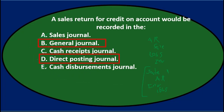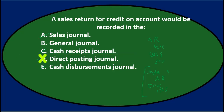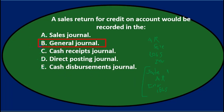So we're left with either B or D. The question is whether the Direct Posting Journal is really a thing — and I don't think it is. Therefore, it would default to the General Journal. We would just make a normal journal entry for this transaction because it doesn't fit neatly into a special journal. Final answer: a sales return for credit on account would be recorded in B, the General Journal.